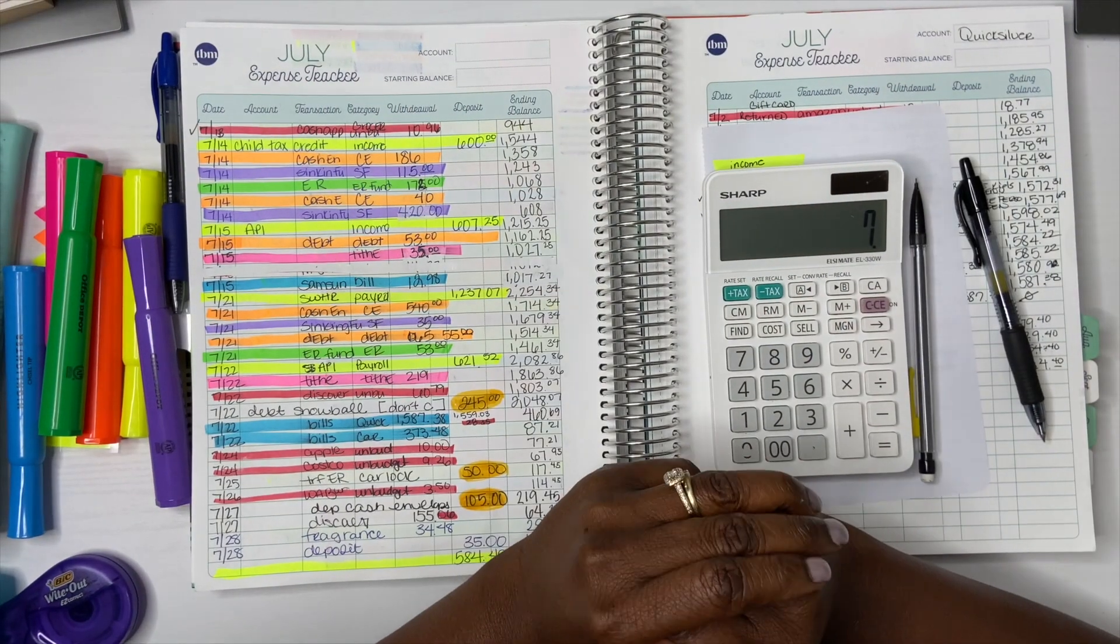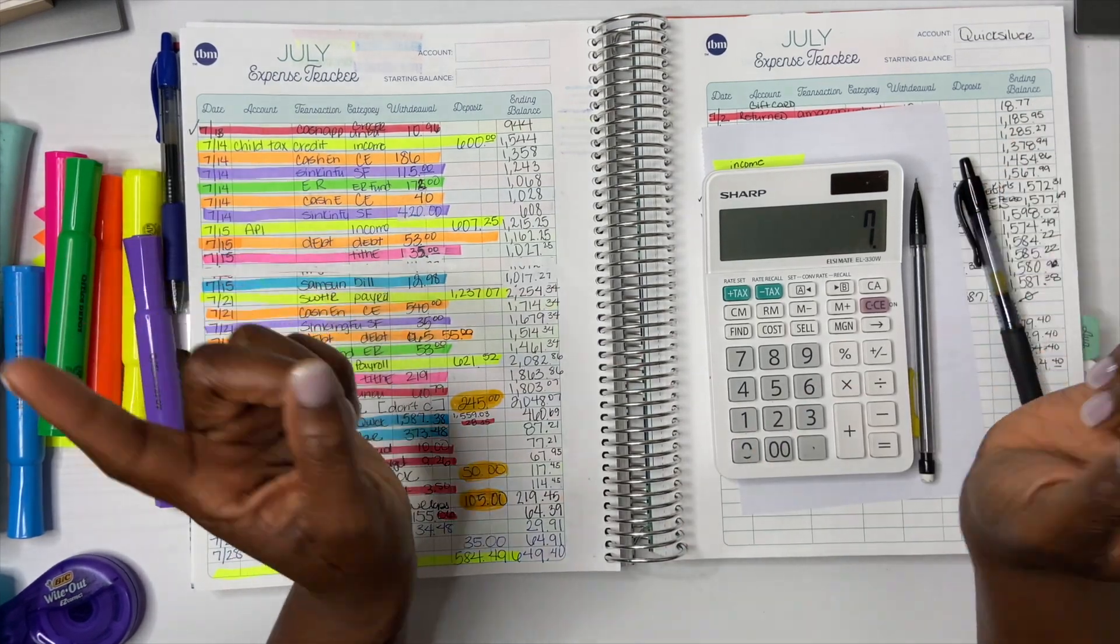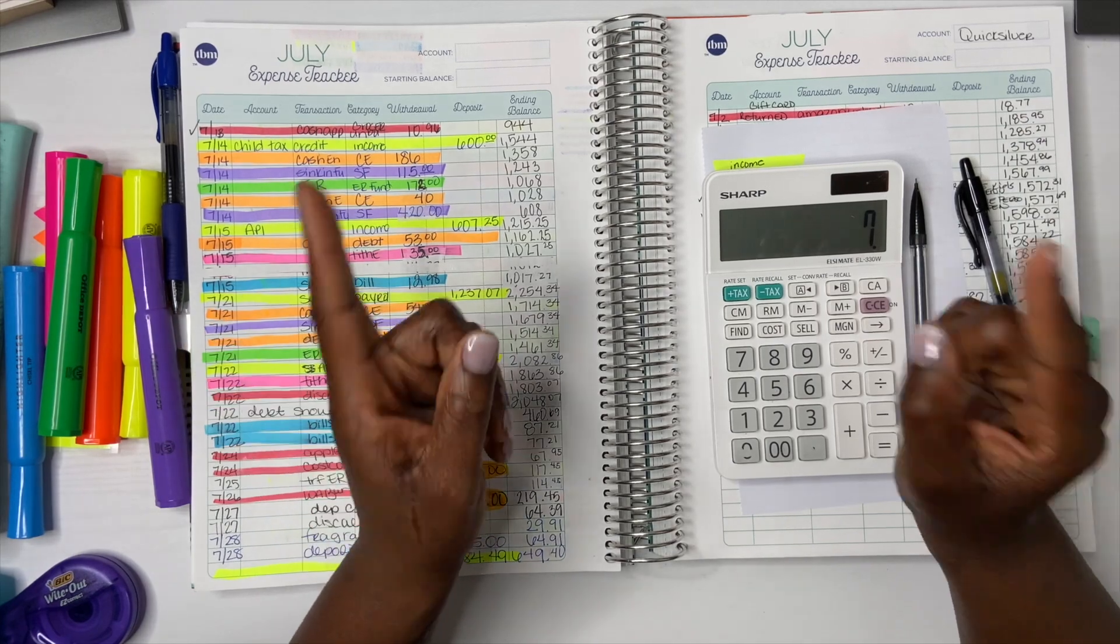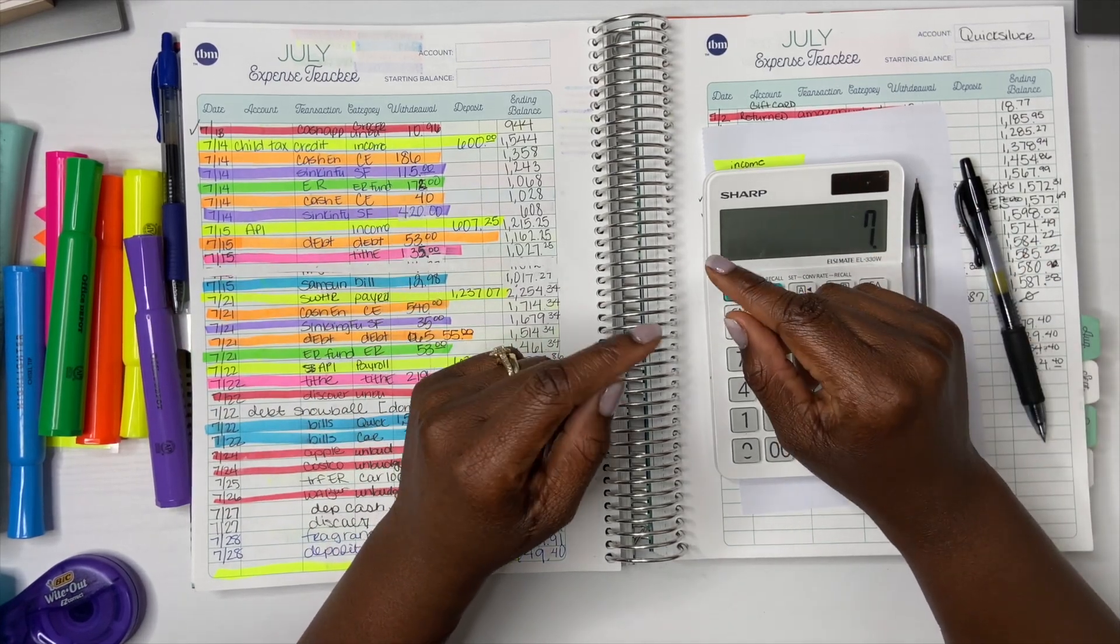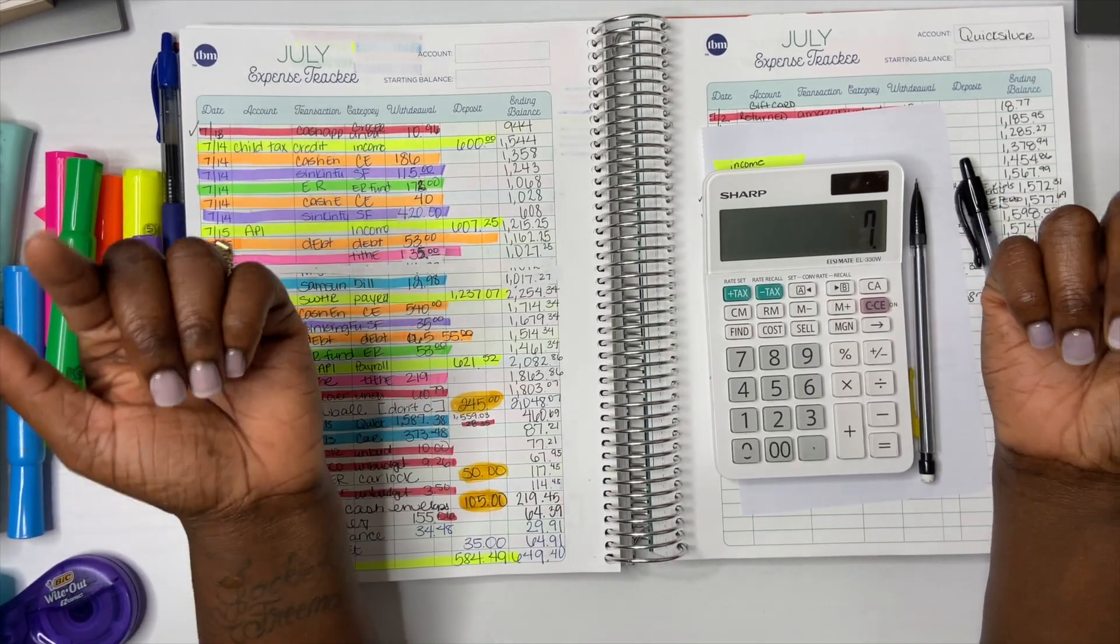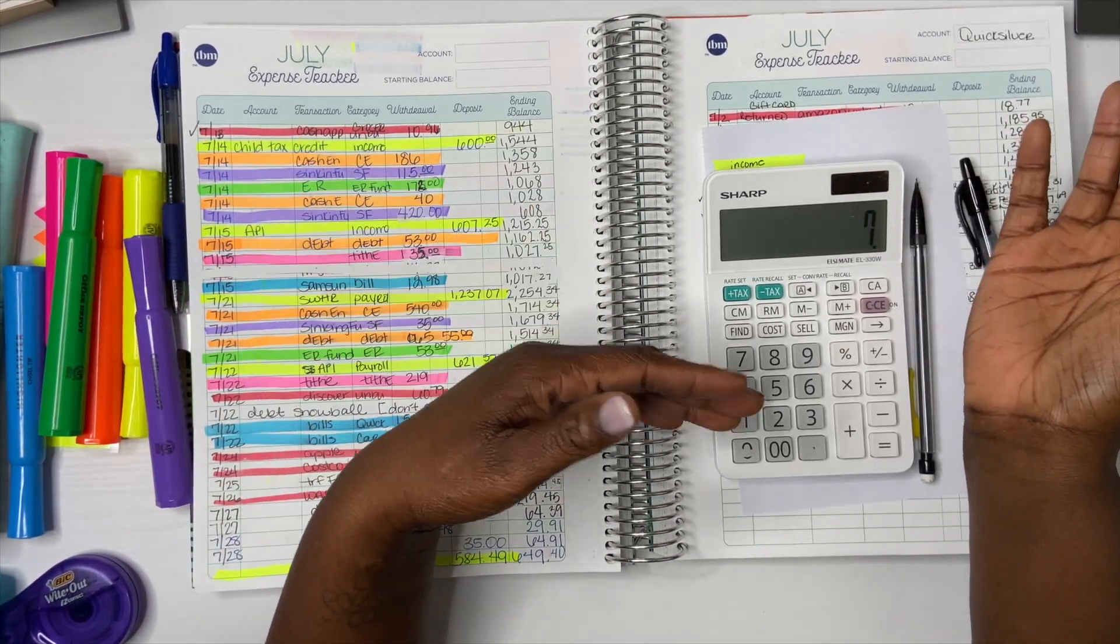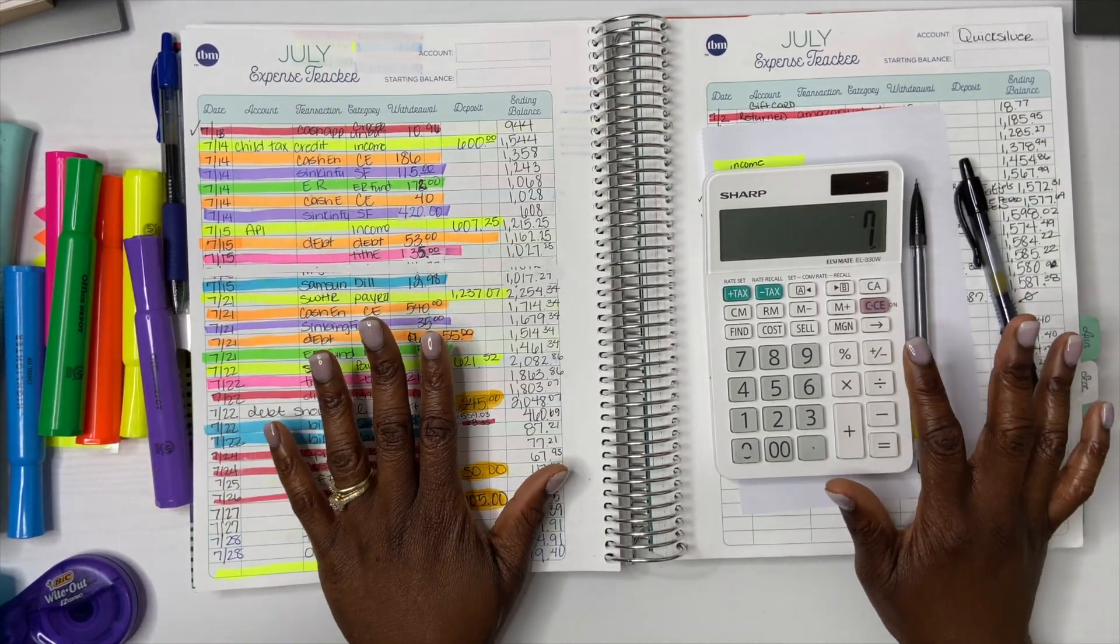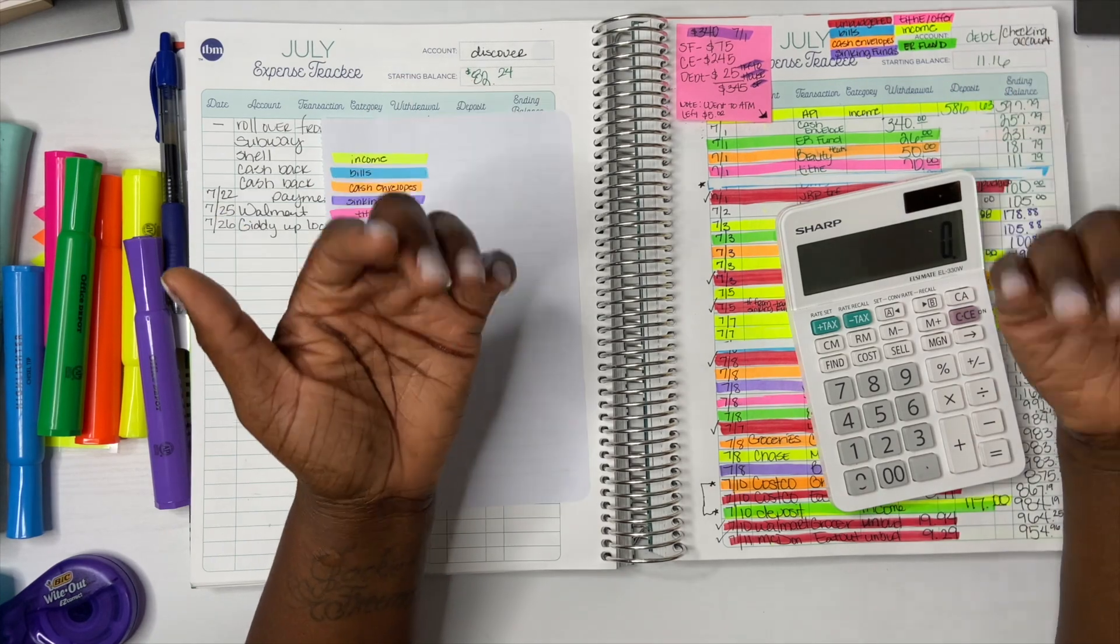Hey you guys, welcome back to my channel. My name is Jackie and I do budget videos here on YouTube. Today's video, we are going to close out our budget for July. I was dedicated to tracking everything, what went in, what came out.